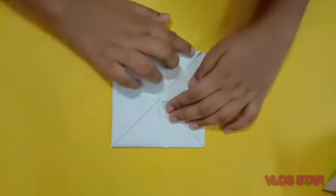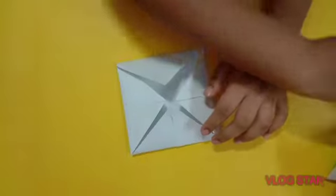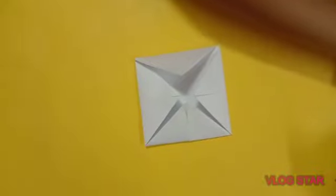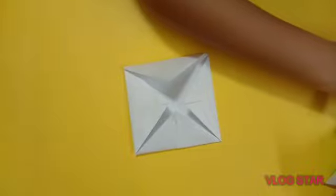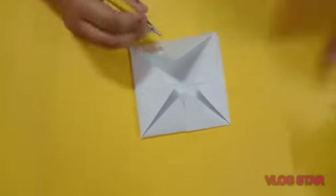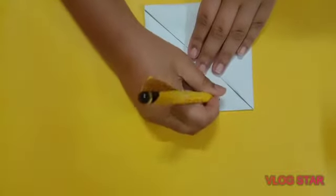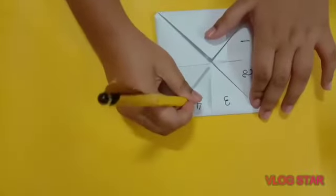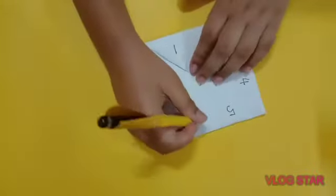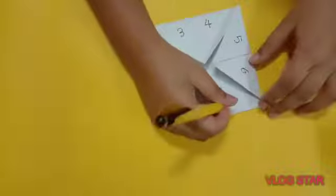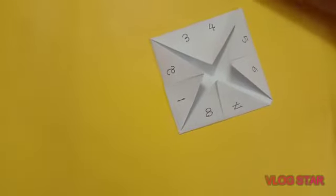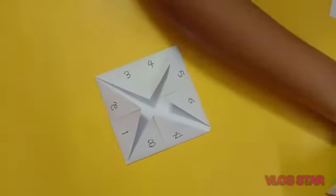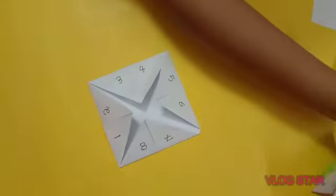Now we need to write the numbers with the black marker pen. Let me just wait a minute, I need to open the marker pen. Write one, two, three, four, five, six, seven, and eight. You're done, just wait for a minute.